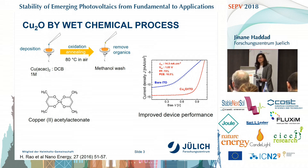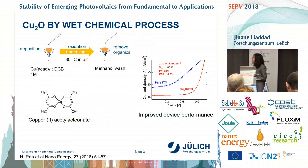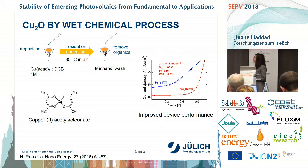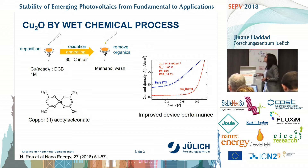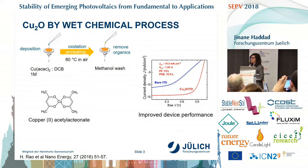I started with a solution process taken from a paper by Rao — it's basically just copper salt, copper acetylacetonate and dichlorobenzene, where we spin-coat it, anneal it, and then wash off with methanol. What we found here — I will explain later why I compare it to bare ITO — there was an increase in performance of the cell: a relatively good cell with a 10.5% efficiency, a high VOC and a nice fill factor. I then tried to understand more how this layer is working and characterize how it is increasing the performance.